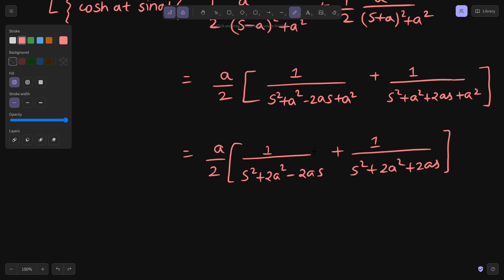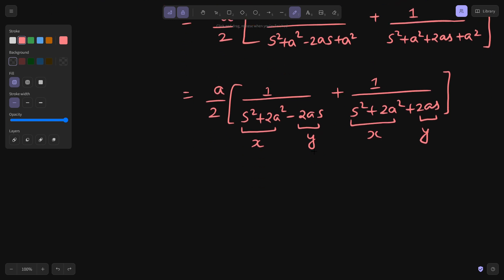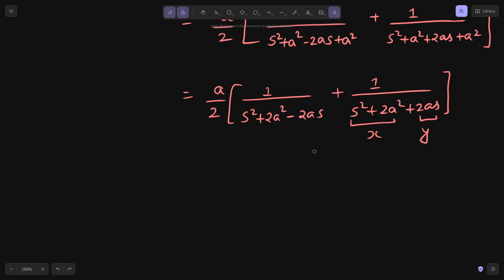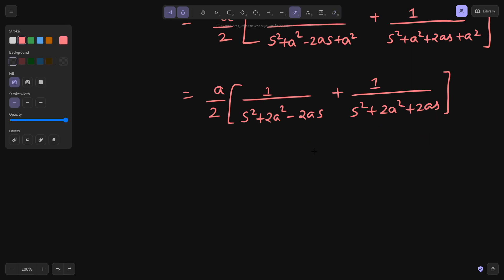They give a certain more complex format or simplified format, whatever you say. As you can see here, if you take this as one term and this as one term, this is similar to x minus y times x plus y. So this is x square minus y square if you take LCM. This was just to make you understand. So this is a by 2 and there you get the LCM. s square plus 2a square is your x, so x square minus in place of y you have 2as.